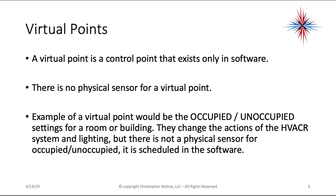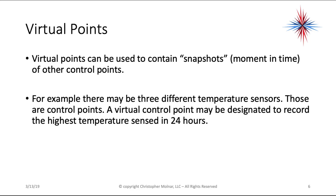A virtual point is a control point that exists only in the software — there's no physical sensor for a virtual point. An example could be the occupied and unoccupied settings for a room or building. They change the actions of the HVAC system and possibly lighting, but there's not a physical sensor for occupied or unoccupied — it's scheduled in the software. Virtual control points can also capture snapshots of other control points, such as recording the highest temperature sensed from three sensors over 24 hours.